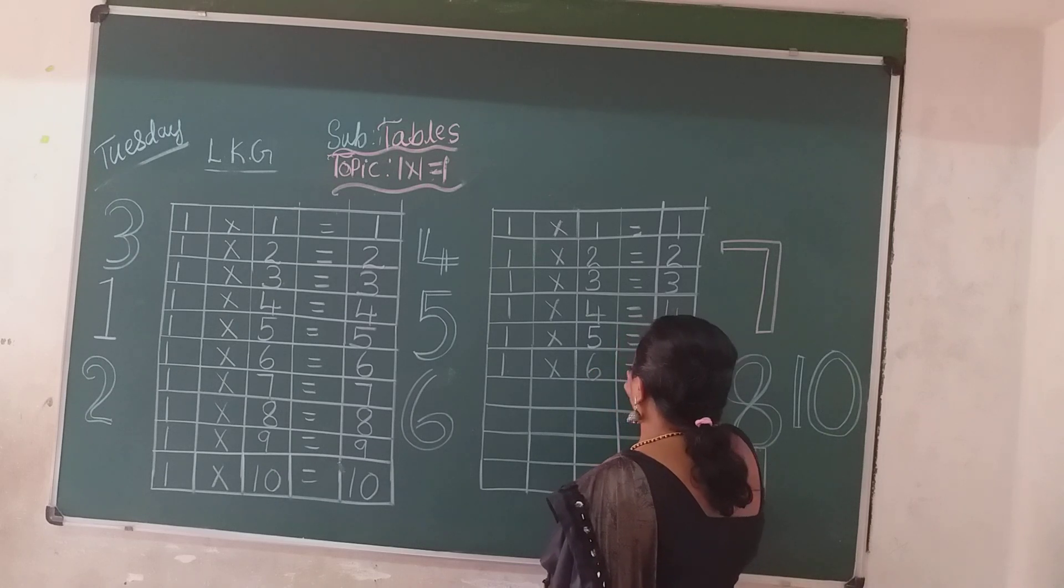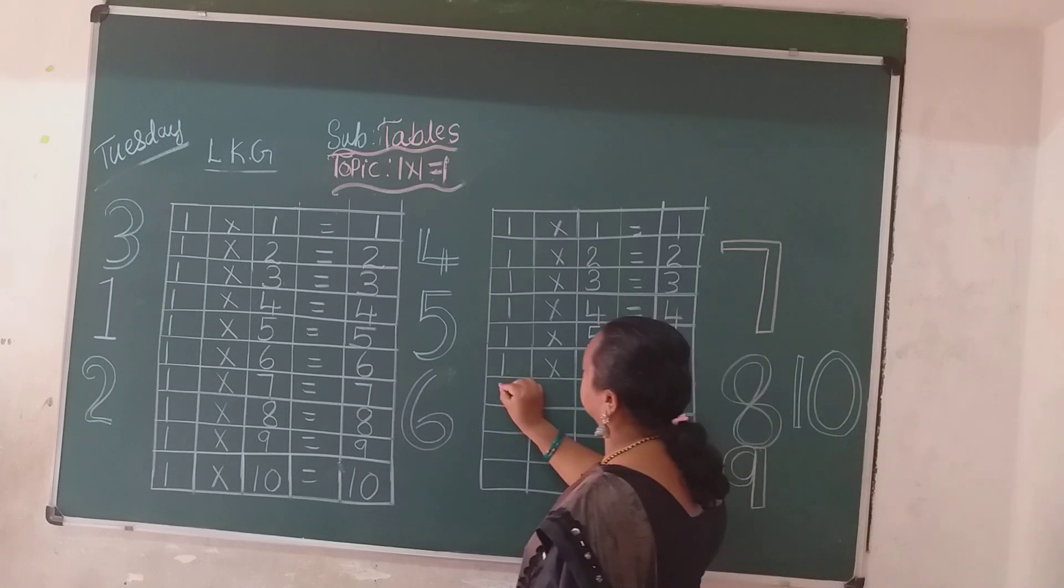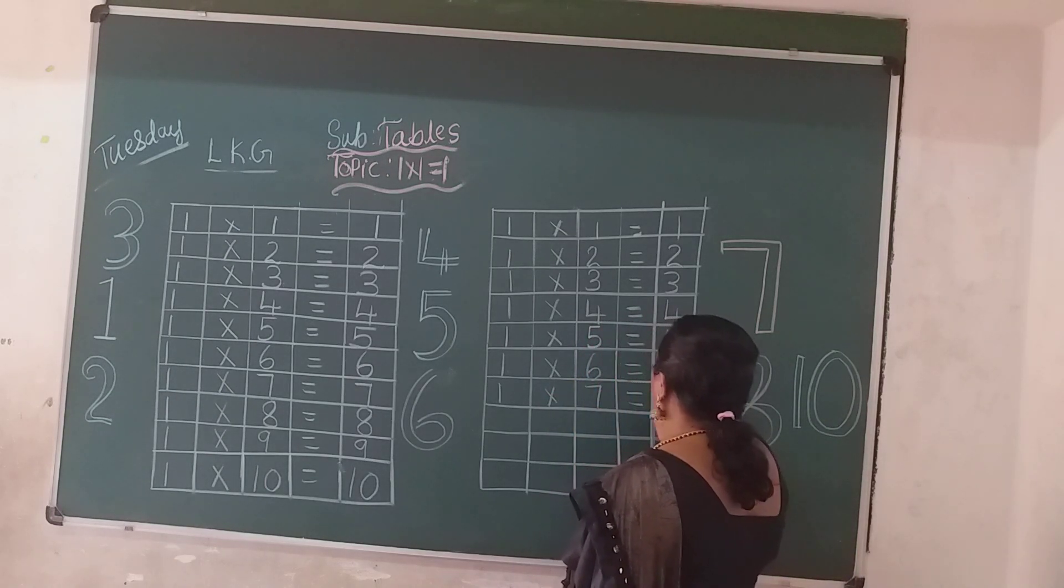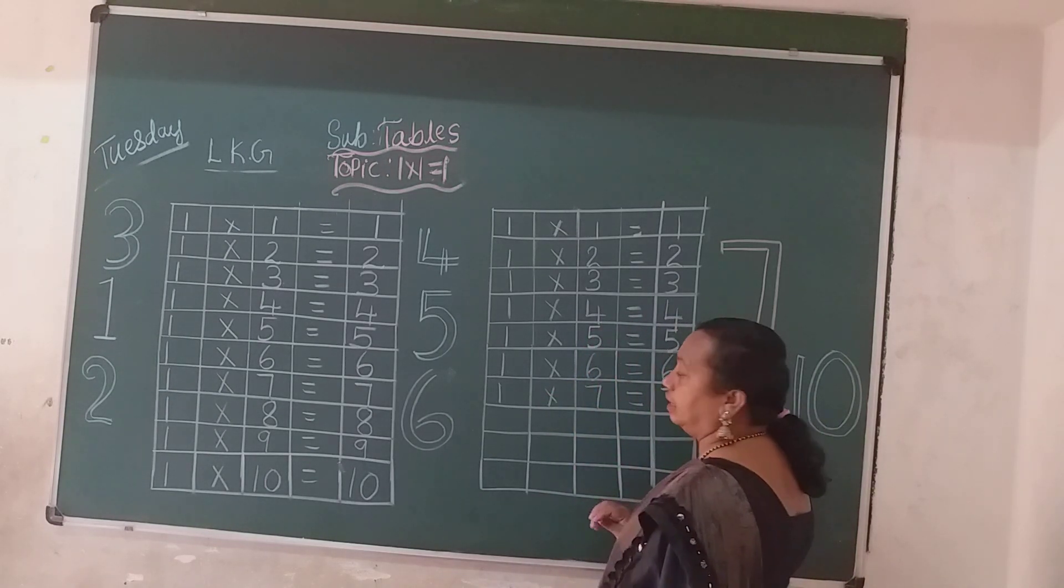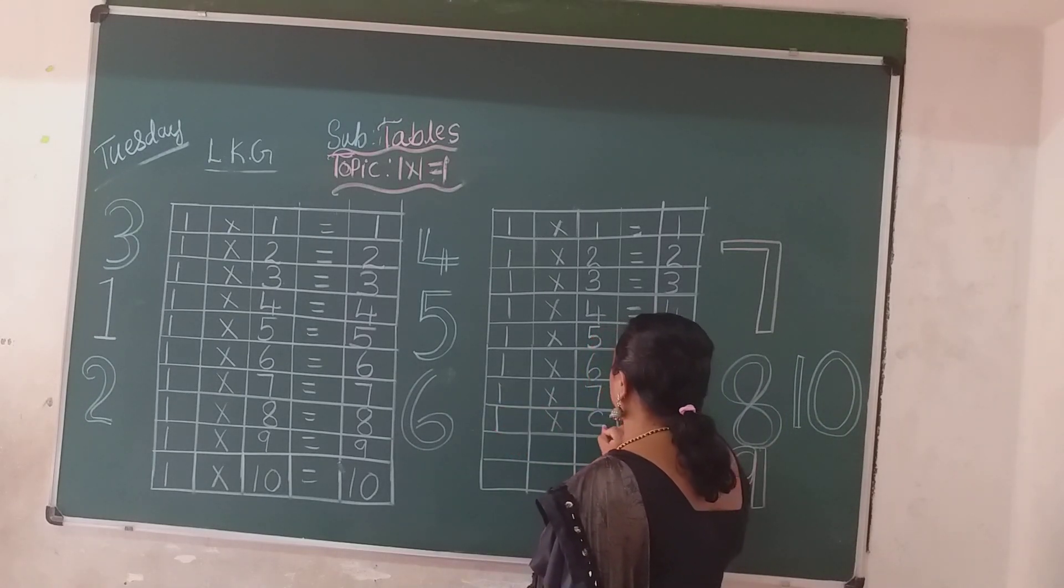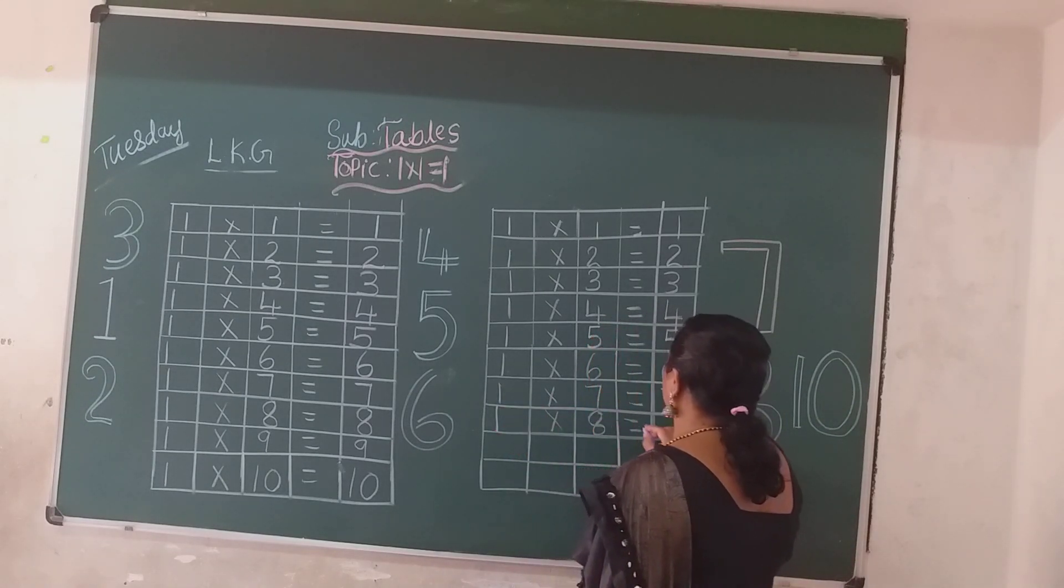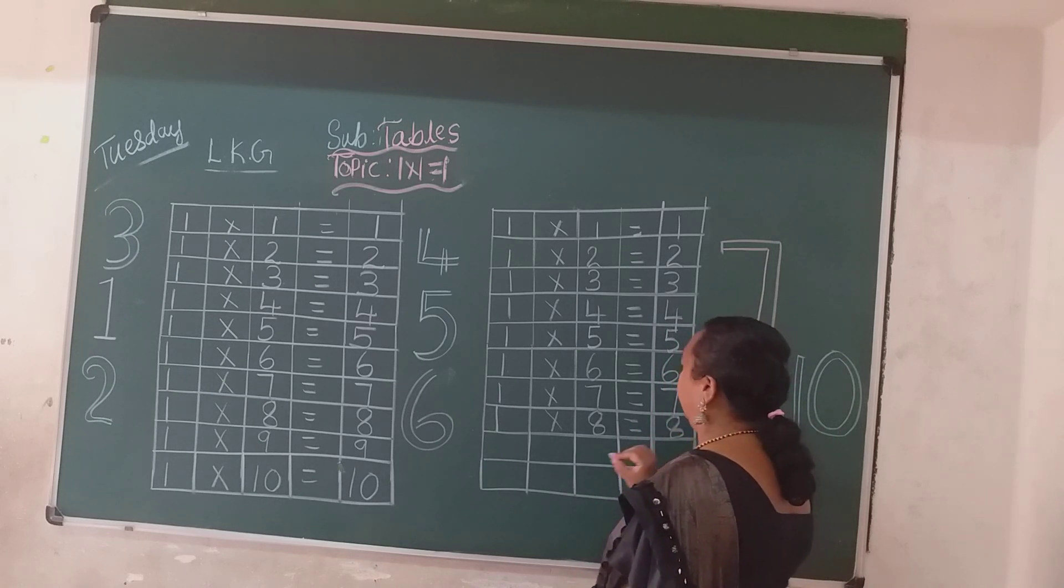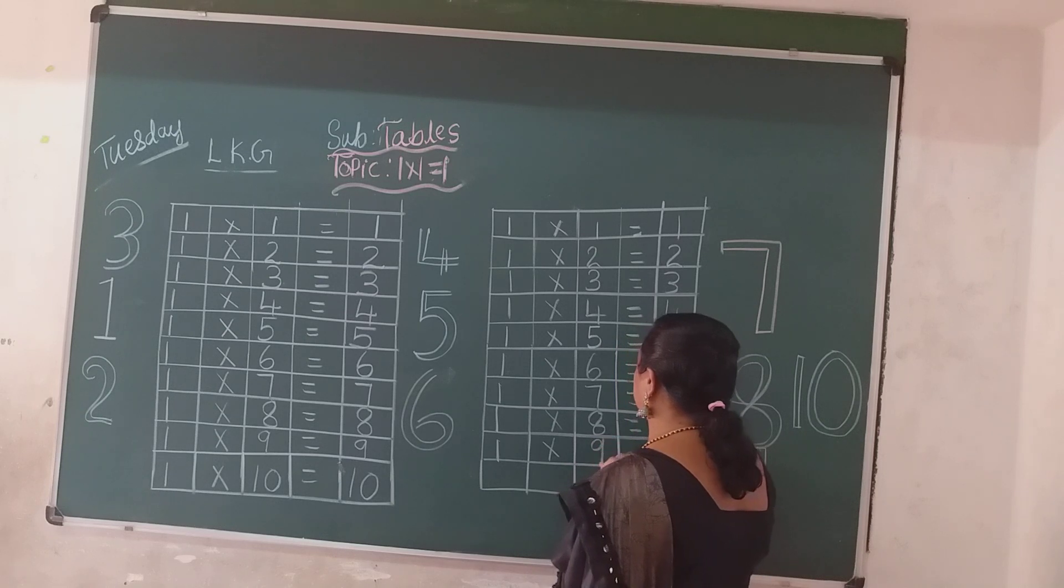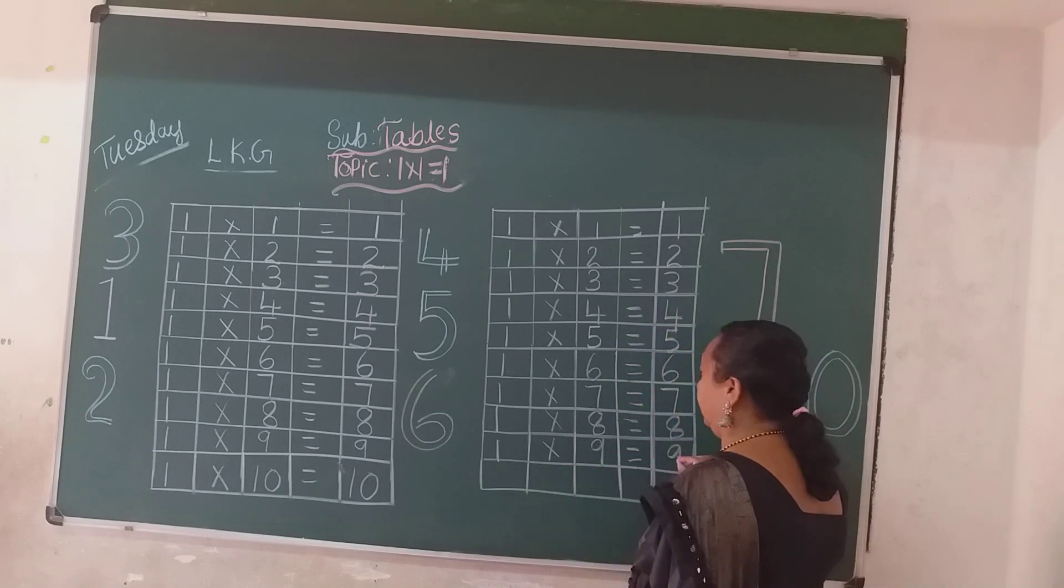One sixes are six. One sevens are seven. One eights are eight. One nines are nine.